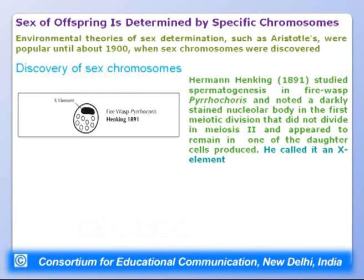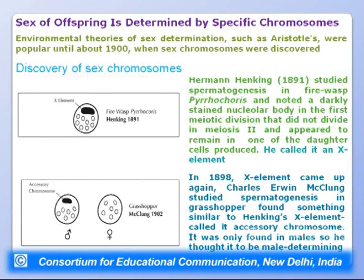In 1891, Hermann Henking studied spermatogenesis in the fire wasp Pyrrhocoris and noted a darkly stained nucleolar body in the first meiotic division that did not divide in meiosis II, remaining in one daughter cell — he called this the X element. In 1898, Charles Edwin McClung studied spermatogenesis in grasshoppers, found a similar X element, called it the accessory chromosome, and thought it was a male-determining factor since it was confined to males.